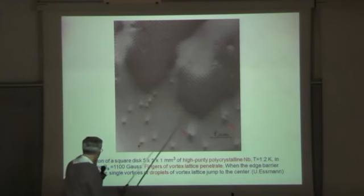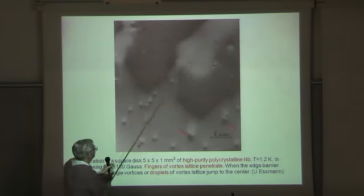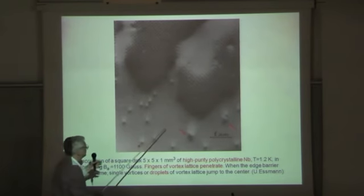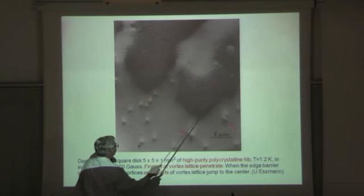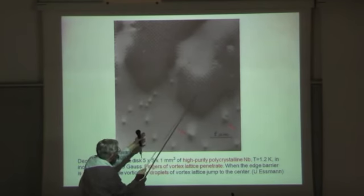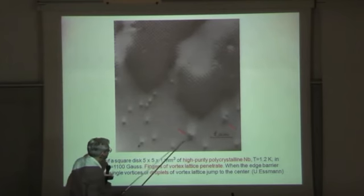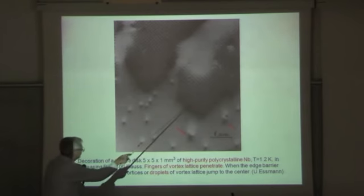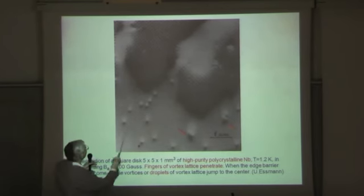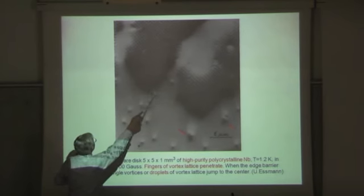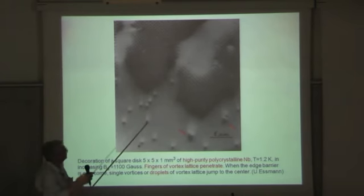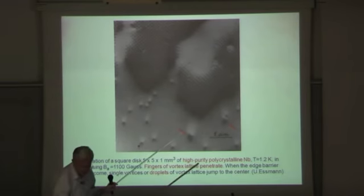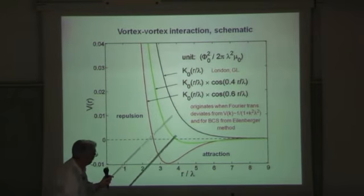Here you can see, again, it's also an old picture from Essmann. This is how the vortex lattice penetrates from the surface into a thin film or thin disc. You see there are clusters, so the vortices attract each other. Here you see three vortices together, or two vortices, and they jump to the middle. The middle is somewhere down here, and the edge of the thin film is close to here. So vortices penetrate in form of fingers or clusters because they are attracting each other here.